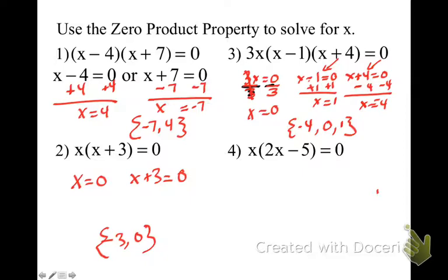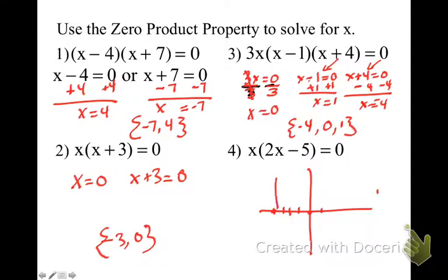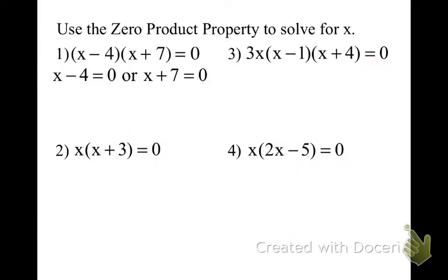When you have three factors like this, it's going to be a cubic function. Cubic functions look like an S — or a backwards S if it's negative. So it's going to be crossing maybe at negative 4, 0, and 1. We can pull that up during homeroom and start looking at these on the graphing calculator.